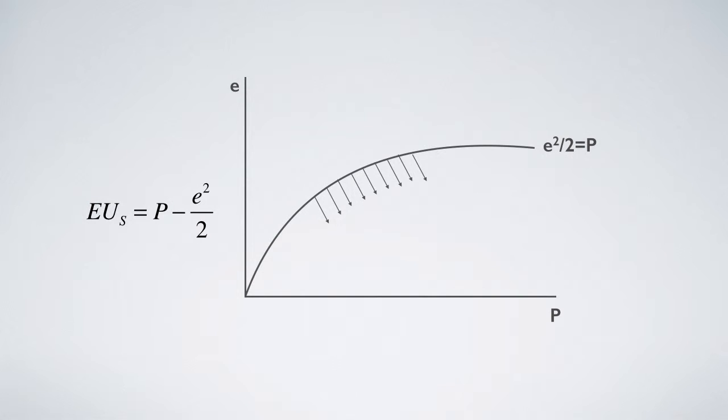The shaded area represents all possible solutions, but there are two extreme cases. The second equation describes the seller's desire: higher price and lower effort. The curve represents the seller's zero utility while the arrows point to the desire.